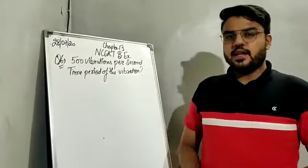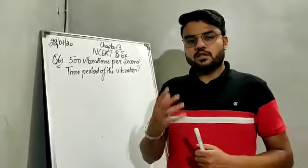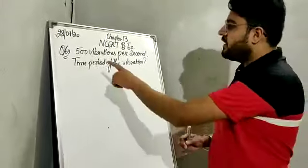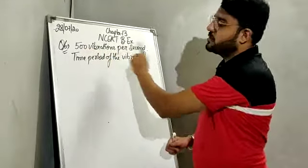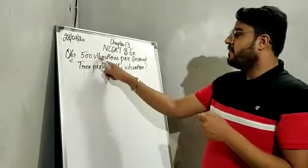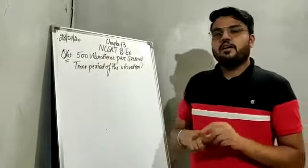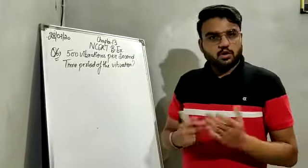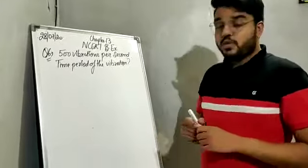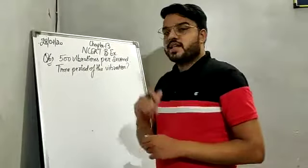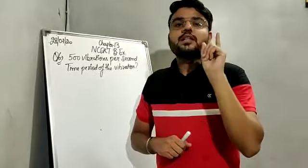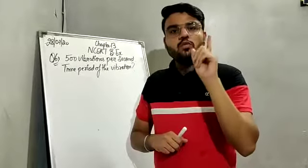Question 6: The sound of a mosquito is produced when it vibrates its wings. The average vibrations are 500 vibrations per second. We have to calculate the time period of the vibrations. Just as we did in the previous question, time period is the time taken to complete one oscillation.